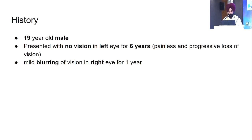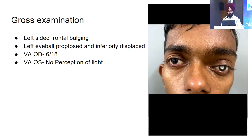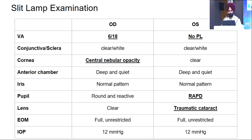A 19-year-old male presented with no vision in the left eye for six years and mild blurring of vision in the right eye for one year. On gross examination, a left-sided frontal bulge was noted and the left eyeball was proptosed and inferiorly displaced. Visual acuity in the right eye was 6/6, and in the left eye the patient had no perception of light. On slit lamp examination, significant findings in the right eye included a central nebular opacity in the cornea, and in the left eye the patient had an RAPD and a traumatic cataract. The rest of the anterior segment examination was within normal limits.